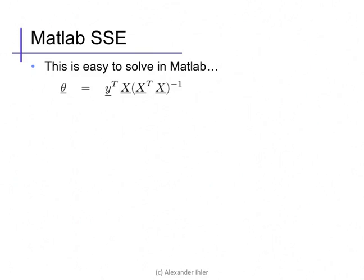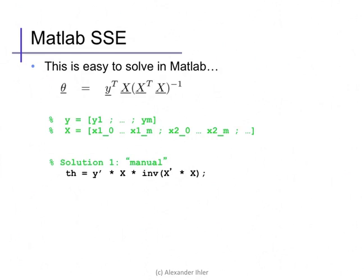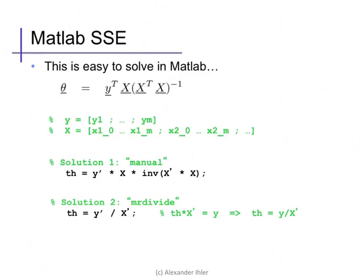Now that we have a linear algebraic form for the optimal value of theta, this is easy to solve in MATLAB. We write our y and x matrix, and we can solve this either manually by executing the form of the equation — y transpose x times inverse of x transpose x — or by using a special MATLAB operator, the matrix-right-divide operation. This operator explicitly solves the set of linear equations defined by y equals theta times x transpose, and lets MATLAB use a more numerically stable solution technique.